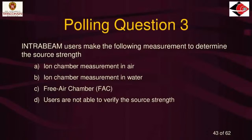Polling question three: IntraBeam users make the following measurements to determine the source strength — A, an ion chamber measurement in air; B, an ion chamber measurement in water; C, a free air chamber; or D, IntraBeam users are not able to verify source strength?